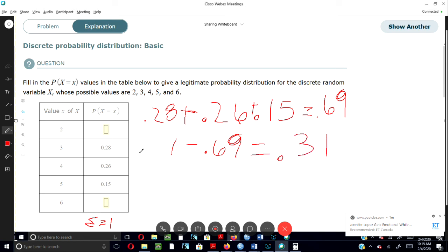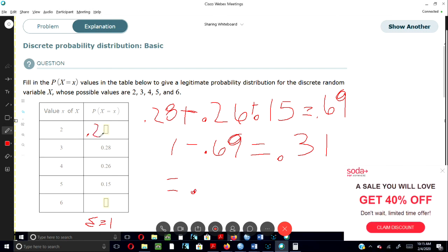So whatever we put in these two spots has to add up to .31 to make the total equal 1. You can pick your two numbers. We'll put .27 in this spot and .04 here, and that will equal 1. That's how you work this problem.